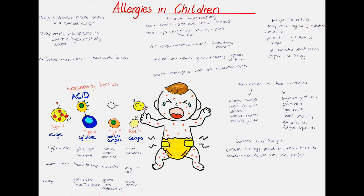Now we will talk about other forms of allergy. Atopic dermatitis is diagnosed by different criteria. For the diagnosis, four of the following are necessary: first, early onset and typical localization of the skin lesions according to the age group; second, pruritus; third, personal or family history of atopy; fourth, IgE-mediated sensitization; fifth, stigmata of atopy. If four of these are present, a patient is said to have atopic dermatitis.